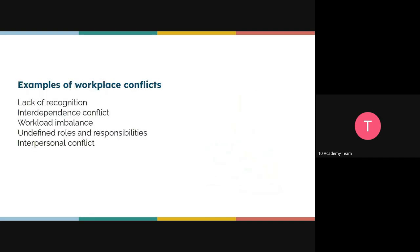Let's look at some examples of workplace conflicts. The first one is lack of recognition. This usually happens when someone contributes to a task but isn't credited. For example, a colleague is working on a project, asks for your input, and you end up working on it together — but because they were the one assigned the task, they get all the credit, and your contribution is never acknowledged. That can lead to conflict.